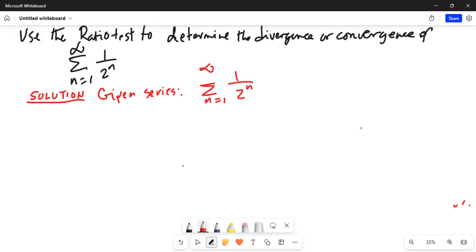We'll take the ratio of two adjacent terms. So limit n tends to infinity, absolute value of a(n+1) divided by a(n). And that is equal to limit n tends to infinity, 1 over 2^(n+1) divided by 1 over 2^n.